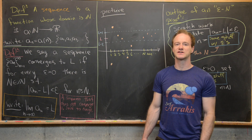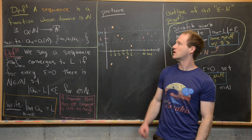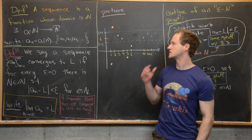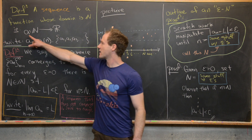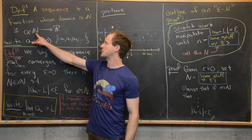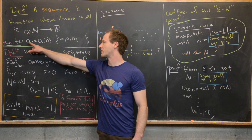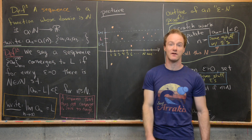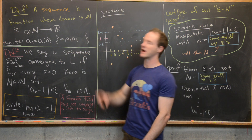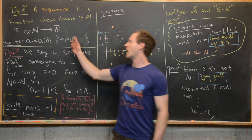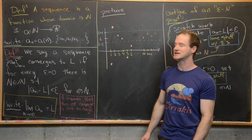This video marks the beginning of our study of sequences. Formally, a sequence is a function whose domain is the natural numbers, but often we think of it like a list. We have a function a which goes from the natural numbers to the real numbers, where we generally write a_n instead of a(n), or we have a list of numbers a_1, a_2, a_3, and so on. These notions are equivalent because the natural numbers are a discrete set.